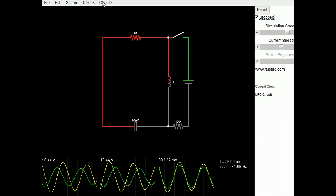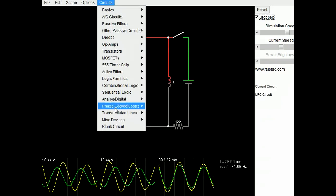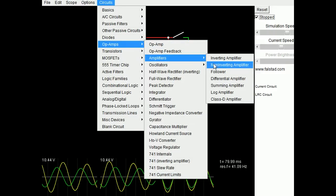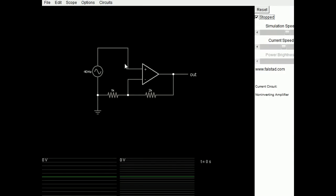We can choose from a variety of circuits here. For this screencast, we're going to do an op amp. We'll come down here and do an amplifier, a non-inverting amplifier is fine. And boom, there's the circuit setup for you. We're pretty much ready to go.